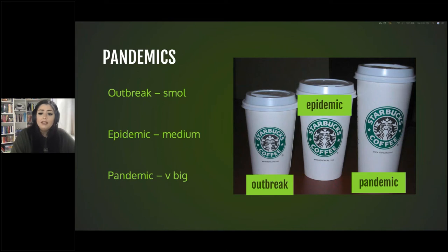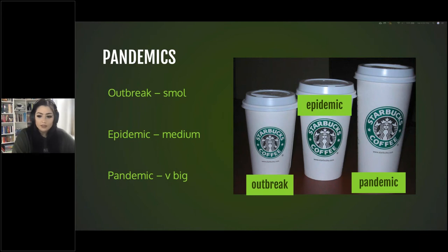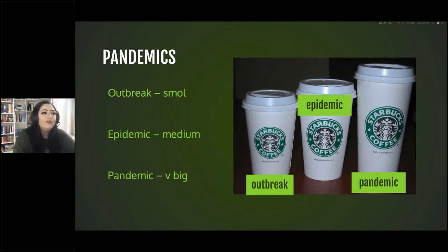An epidemic is when a disease affects a large number of people within a community, population, or region. The Zika virus could be considered an epidemic because it affected a large number of people but wasn't globally widespread. A pandemic is an epidemic that spreads over multiple countries or continents — which is what we're going through right now.